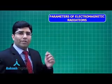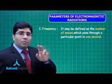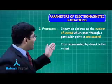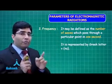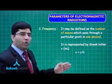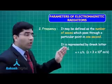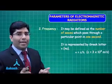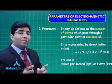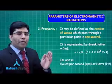Frequency is defined as the number of waves passing through per second, or oscillations per second. It is designated by the Greek letter nu. To find the frequency, we use the formula nu equals c divided by lambda, where c is the speed of light, equal to 3 times 10 to the power 8 meters per second. The unit of frequency is cycles per second, hertz, or per second.